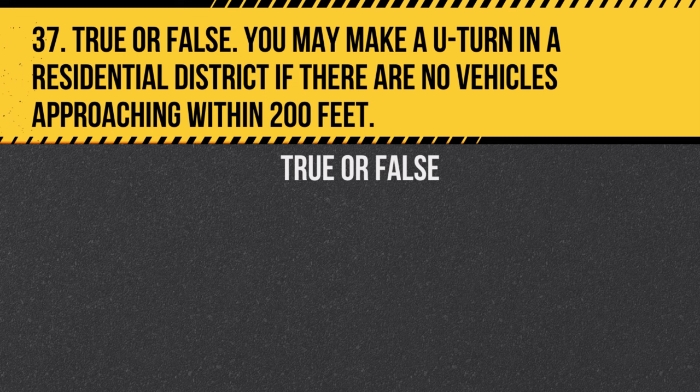Question 37. True or false: You may make a U-turn in a residential district if there are no vehicles approaching within 200 feet. Answer: True. In residential areas, U-turns are allowed if they can be made safely without disrupting traffic.